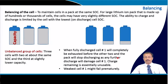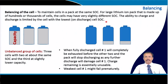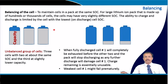Cell balancing is extremely important and one of the key functions of the BMS. The goal is to maintain cells in a pack at the same state of charge. When a large lithium ion pack made up of hundreds or thousands of cells is connected in series to increase voltage or in parallel to increase capacity, each individual cell may have slightly different capacity. As you can see, one particular cell has a slightly lower state of charge compared to the other two — this is an unbalanced group of cells.